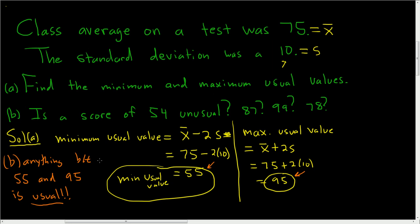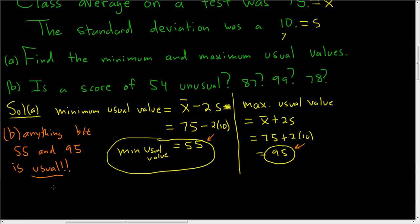So for 54, is 54 between 55 and 95? No it's not, so this would be unusual. 54 is unusual, it's an unusually low score.